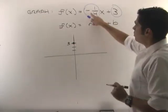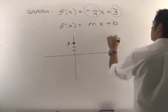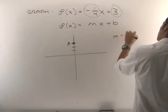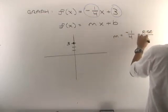Now, what we do is we use the slope to get to another point. Remember, slope, the m is negative one over four. This is equal to our rise over our run.